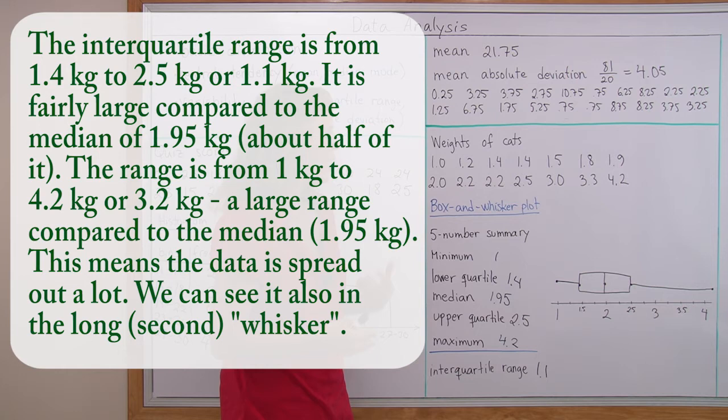We can see it also in the long second whisker. The latter whisker is actually longer than the box, longer than the interquartile range.